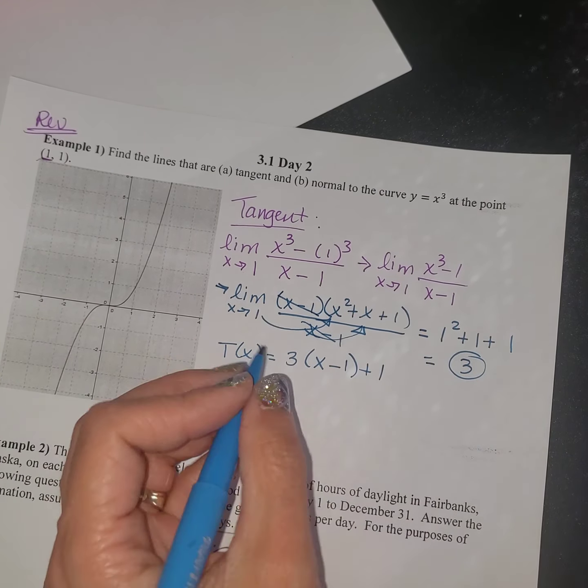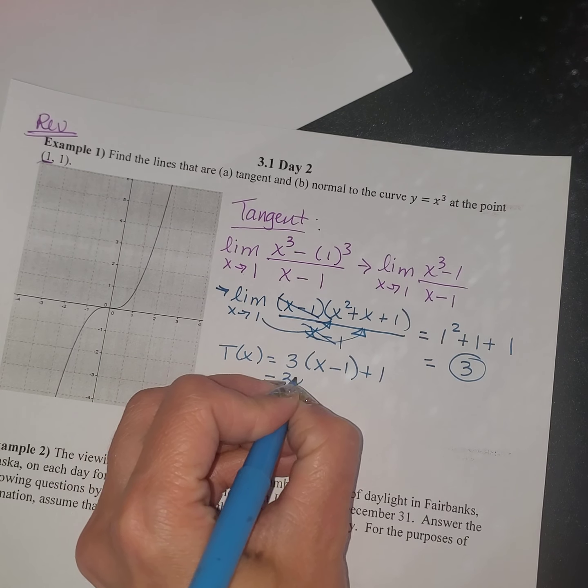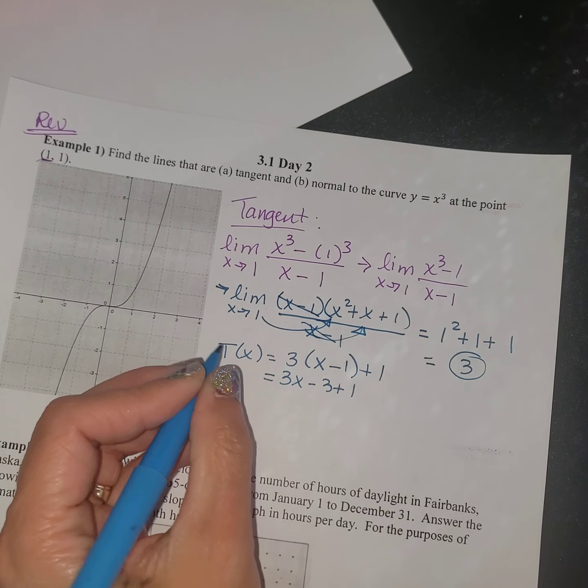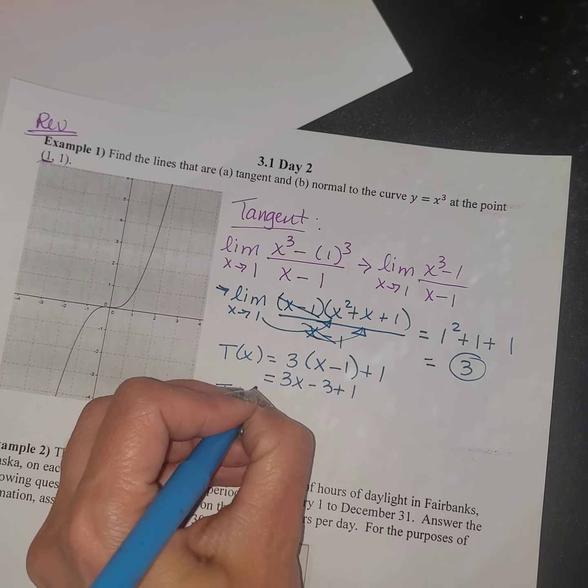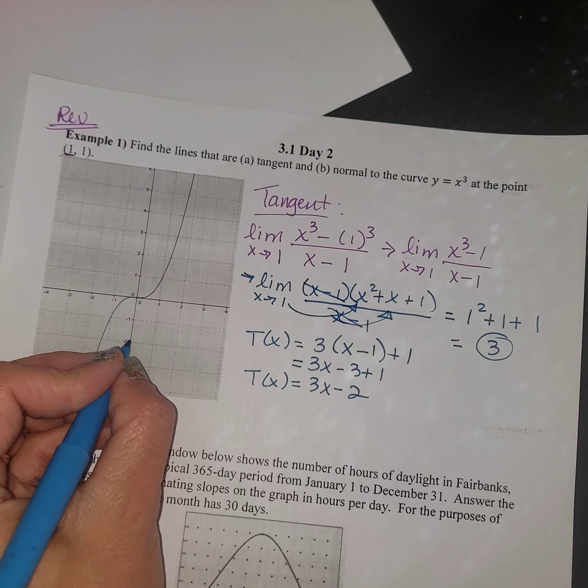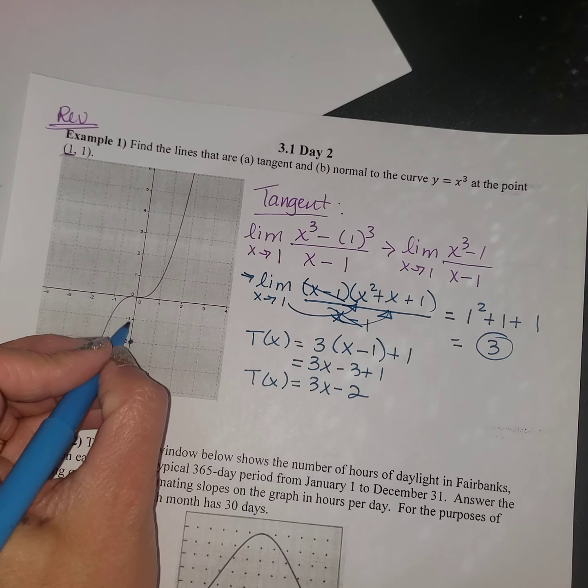So this becomes the limit as x approaches 1 of, it factors down to x minus 1 times the quantity x squared plus x plus 1, all over x minus 1. These cancel because they're a whole, and then we can go ahead and plug in the 1 for all the x's right here. So we'll have 1 squared plus 1 plus 1, which ends up being 3. So we have a slope of 3.